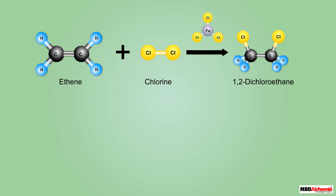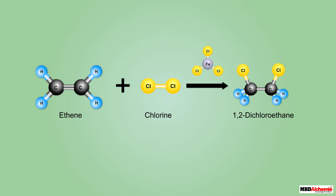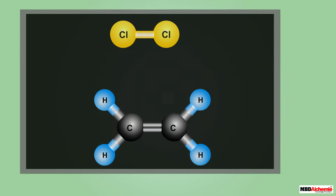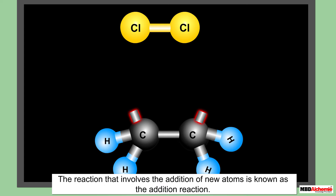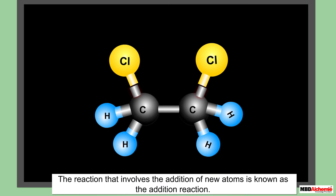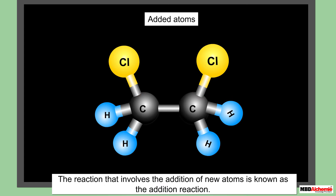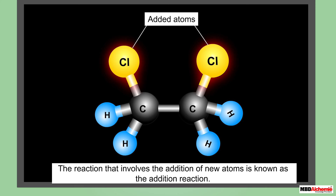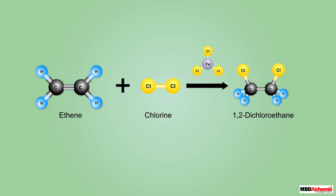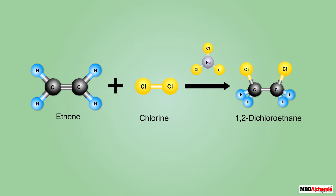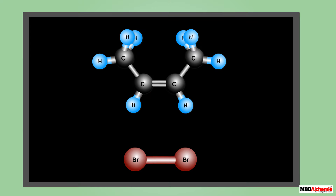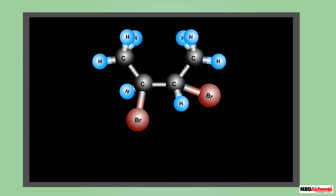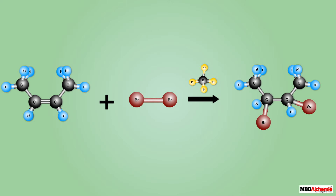In the case of ethene, the chlorine atoms add to the carbon atoms after partial breaking of the double bond. Since this reaction involves the addition of new atoms, it is known as the addition reaction. Ethene is not the only unsaturated compound that undergoes the addition reaction — other unsaturated compounds also undergo addition reactions under suitable conditions.